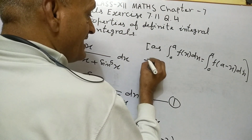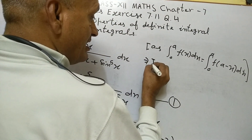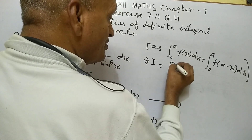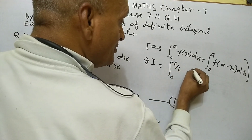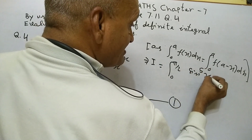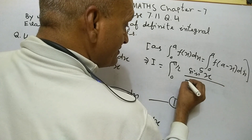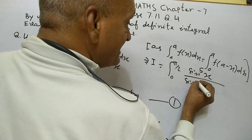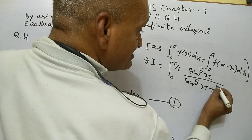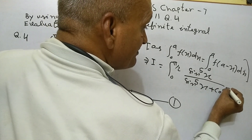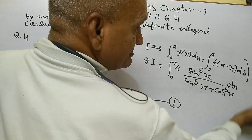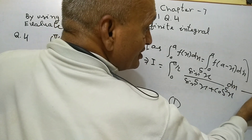This implies I equal integral from 0 to π/2 of sin⁵x upon (sin⁵x plus cos⁵x) dx. This is equation 2.